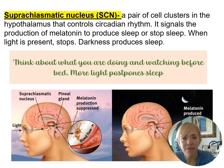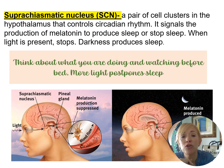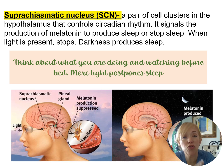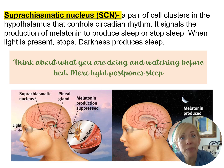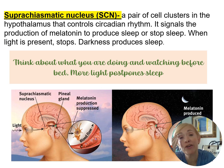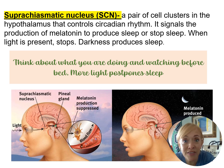If you're having trouble sleeping, turn off the TV and the lights. The suprachiasmatic nucleus (SCN) — a pair of cell clusters in the hypothalamus — controls the circadian rhythm. When lights are on, the SCN is disrupted and sleep is prevented. Creating darkness promotes sleep.